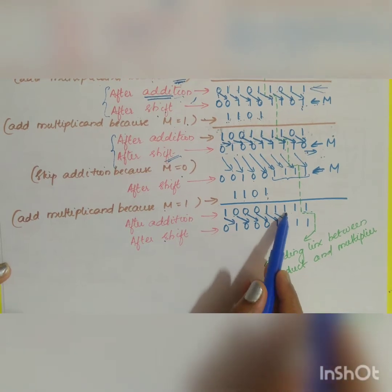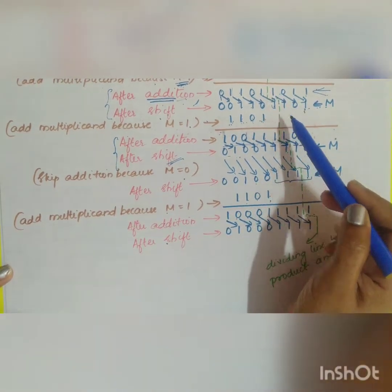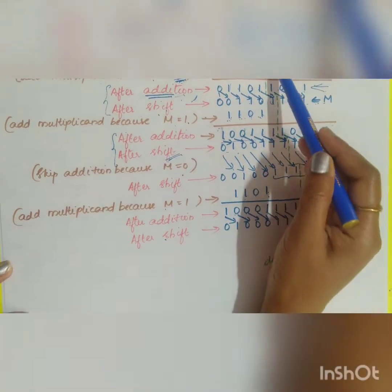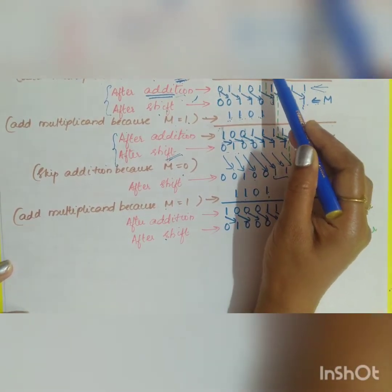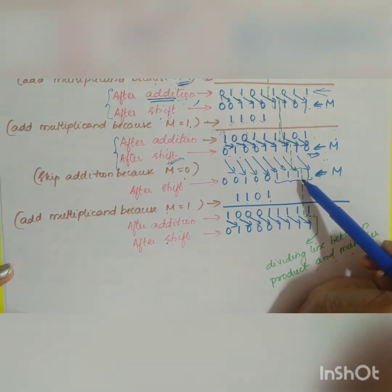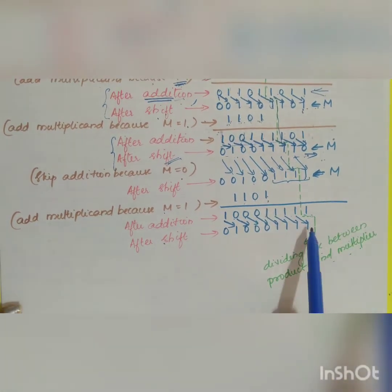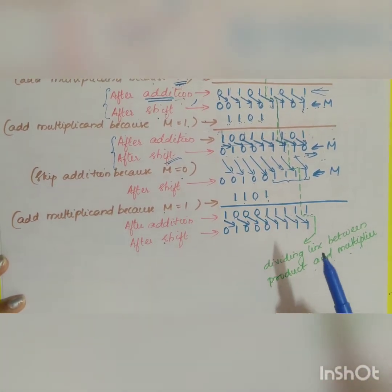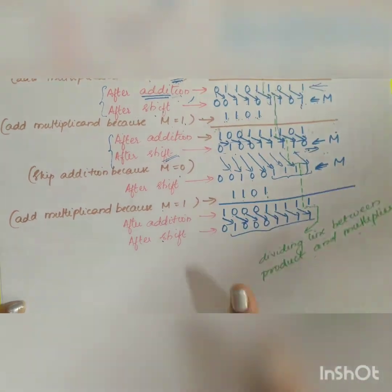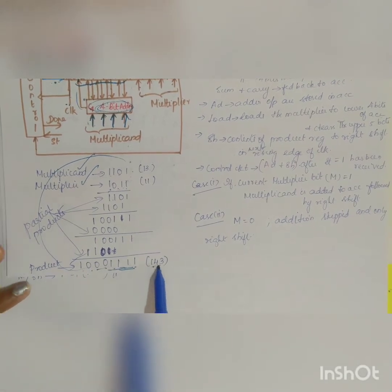The green line in the diagram separates the product portion from the multiplier portion of the accumulator. Initially the multiplier occupies four bits, then three, then two, then one, as shifts proceed. After all four shifts are complete, the final product stored in the accumulator is 10001111 in binary, which equals 143 in decimal.